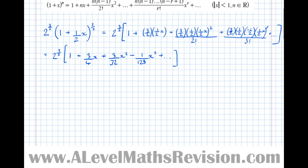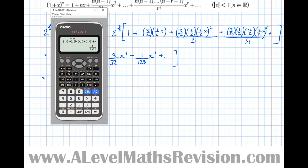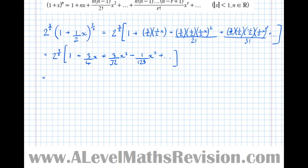Now let's work out 2 to the power of 3/2. The denominator of 2 in the power means square root, and the numerator means cubed. So that's the square root of 2³ = √8 = 2√2. You can check that on the calculator if you like.